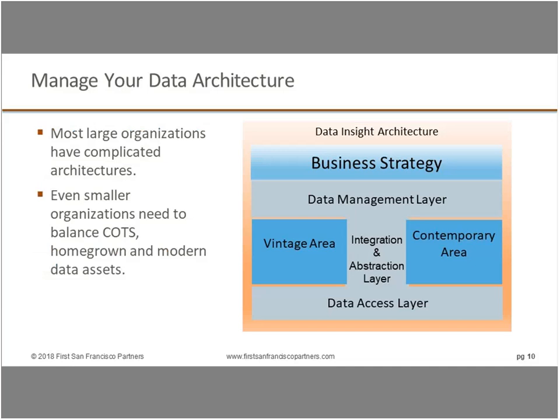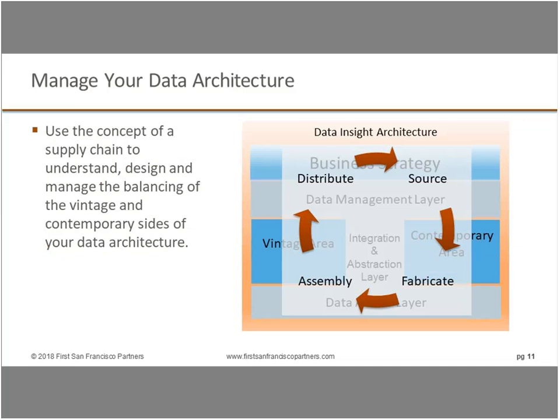Going back to our reference architecture: most organizations are complicated. Even smaller organizations — as analytics and machine learning trickle down — have off-the-shelf old packages, off-the-shelf new packages, homegrown things, and modern data assets. Your architecture in the 21st century is complicated. There is no one simple setup where you have some source systems, stage and clean the data, and then use it for great things. It's never that simple. Building a data supply chain allows you to balance the movement between the vintage and contemporary sides of your architecture.